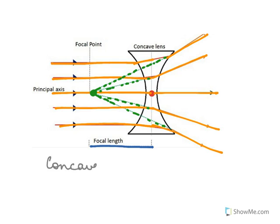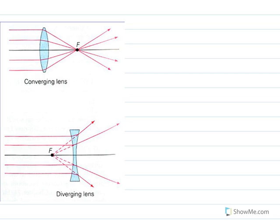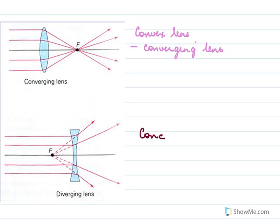This is a concave lens because the surfaces are concave, and a concave lens is a diverging lens — it spreads out the rays, unlike the convex lens which converges the rays. Comparing the two: the convex lens is a converging lens — it brings rays together — while the concave lens is a diverging lens — the rays spread out.